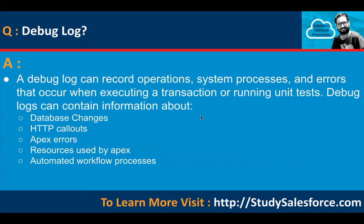What is a debug log? A debug log can record operations, system processes, and errors that occur when executing a transaction or running unit tests. Debug logs can contain information about database changes, HTTP callouts, Apex errors, and resources used by Apex automated workflow processes.